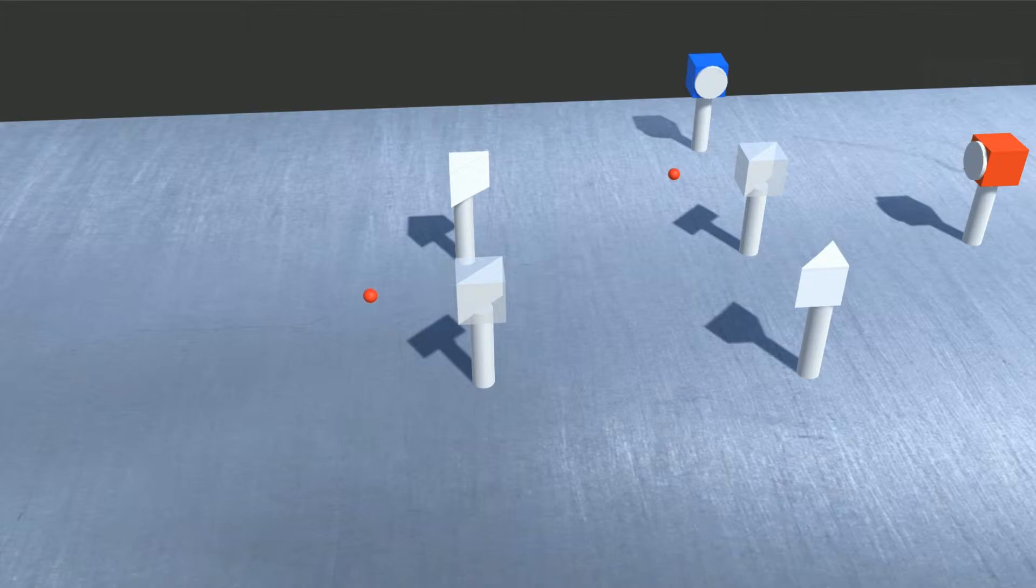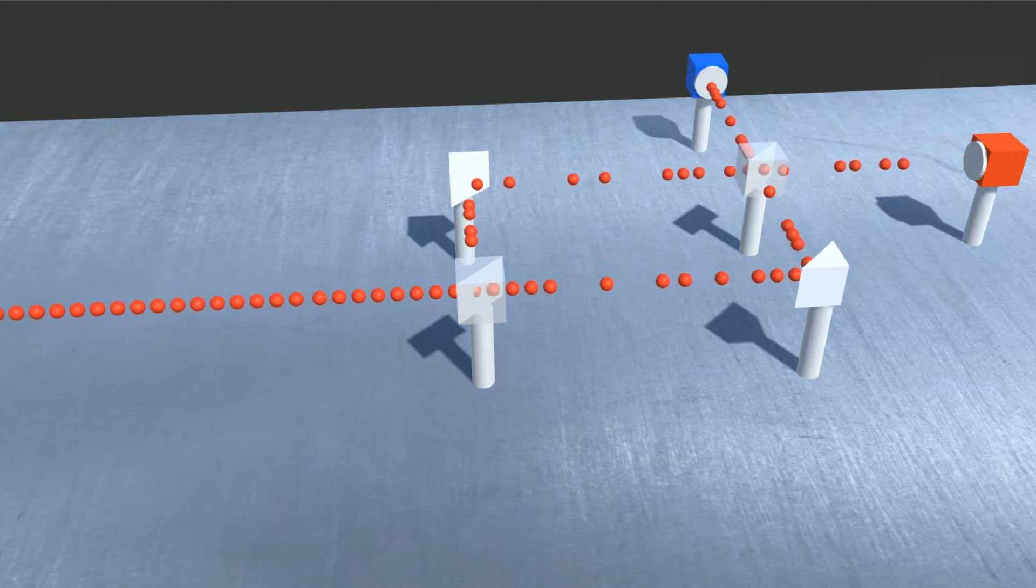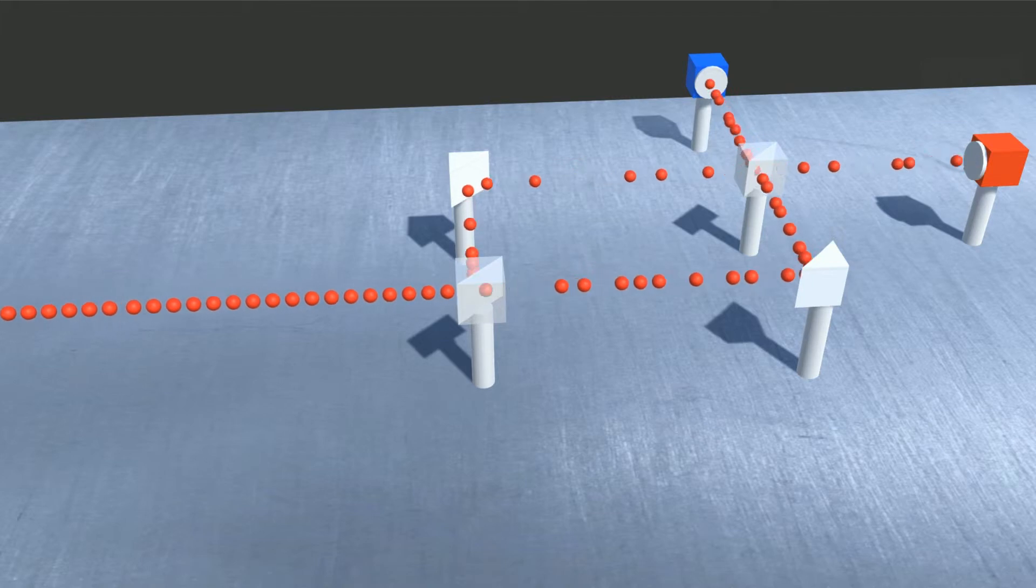The path length of each arm can be adjusted by moving the associated mirror. When we adjust one of the path lengths of our Mach-Zehnder interferometer, we can see that the distribution of detections between our two detectors changes.